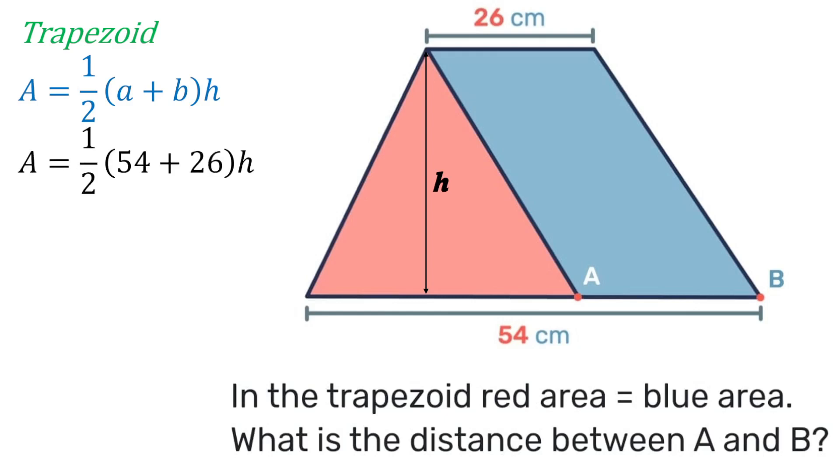Substituting our values for a and b, 54 plus 26 gives us 80. Therefore the area of the trapezoid is half of 80 times h which is 40h. Next, dealing with the red triangle, we know that the formula for the area of a triangle is half base times height.